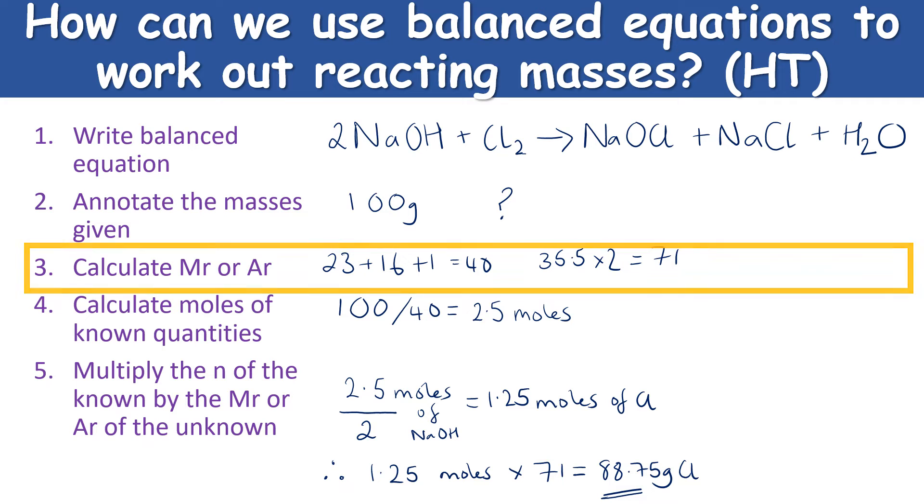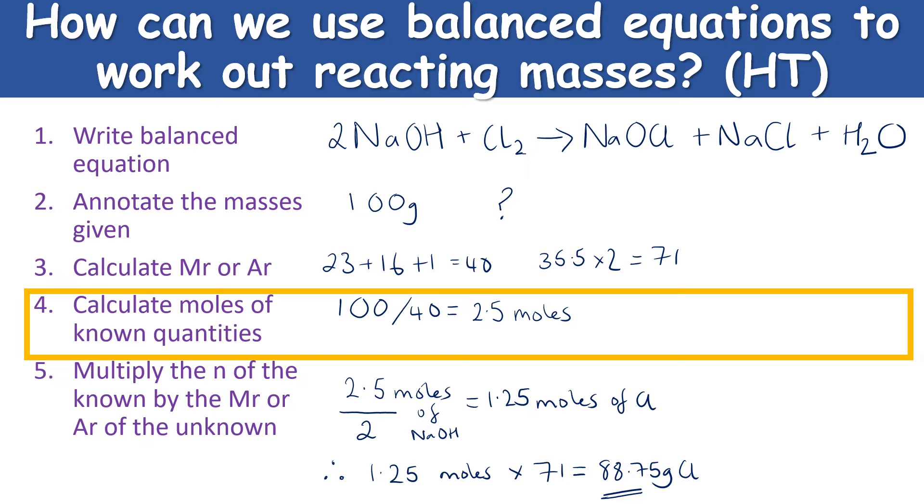Then step four: calculate the moles of known quantities, so that is using the mole equation n for moles equals m for mass in grams. Remember, this is the one equation where mass is not in kilograms, it's in grams, divided by the Mr, the relative formula mass. So I only have the known mass that I can calculate the moles for, and I get the number of moles of sodium hydroxide as 2.5 moles.